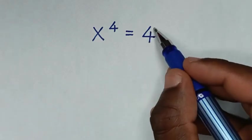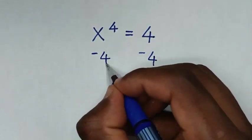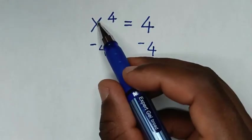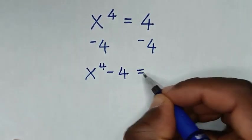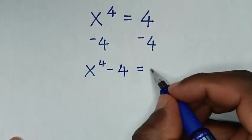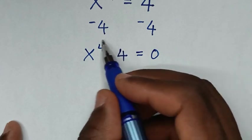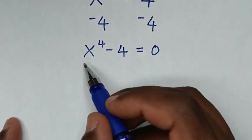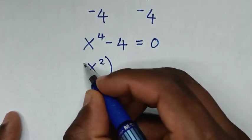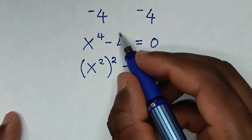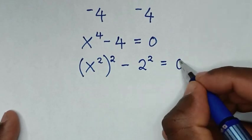First we will take this 4 to the left side by subtracting 4 from both sides. So it will be x to the power of 4 minus 4 is equal to 0. Then in the next step, on the left side we make this in the form of a perfect square. So x to the power of 4 as a square is (x²)², and minus 4 as a square is 2², equal to 0.